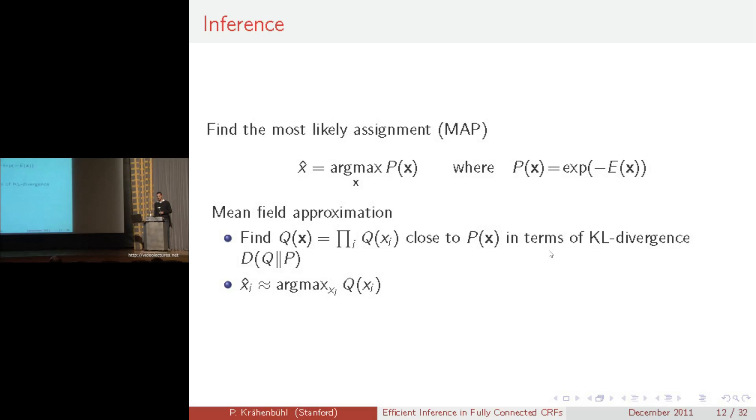The mean field approximation is found using the formula here on top of the slide. For detailed derivation, I would like to refer you to our paper. What this formula says is that we first need to initialize our guess for Q, and we do this by just initializing it to the unary potentials. Then we iterate over a message passing step, which propagates all approximations Q from any variable to any other variable in the CRF. Then we apply a label compatibility transformation for every variable independently, add in the unary term, and normalize.